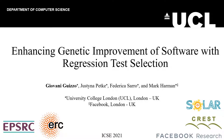Hello, my name is Giovanni Guizzo. I'm a research fellow at University College London, and today I'm going to present the paper "Enhancing Genetic Improvement of Software with Regression Test Selection." This is a paper I wrote with Dr. Justyna Petke, Professor Frederica Sarro, and Professor Mark Harman from our group, SOLAR.